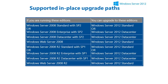Let's start with the first topic: Active Directory deployment and DC cloning. Before we deploy a domain controller, we need to understand the prerequisites for deploying Active Directory, especially the supported in-place upgrade paths. If you're planning to upgrade your Active Directory, the minimum system requirement for an in-place upgrade is Windows Server 2008 Standard Edition with at least SP2, or Windows Server 2008 R2 with SP1.